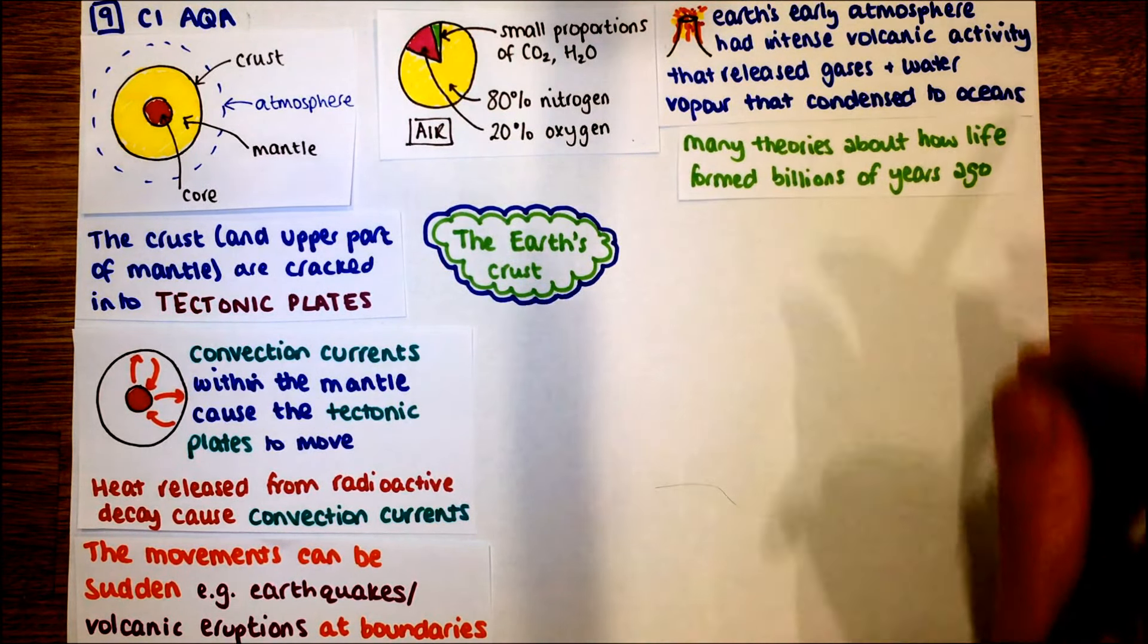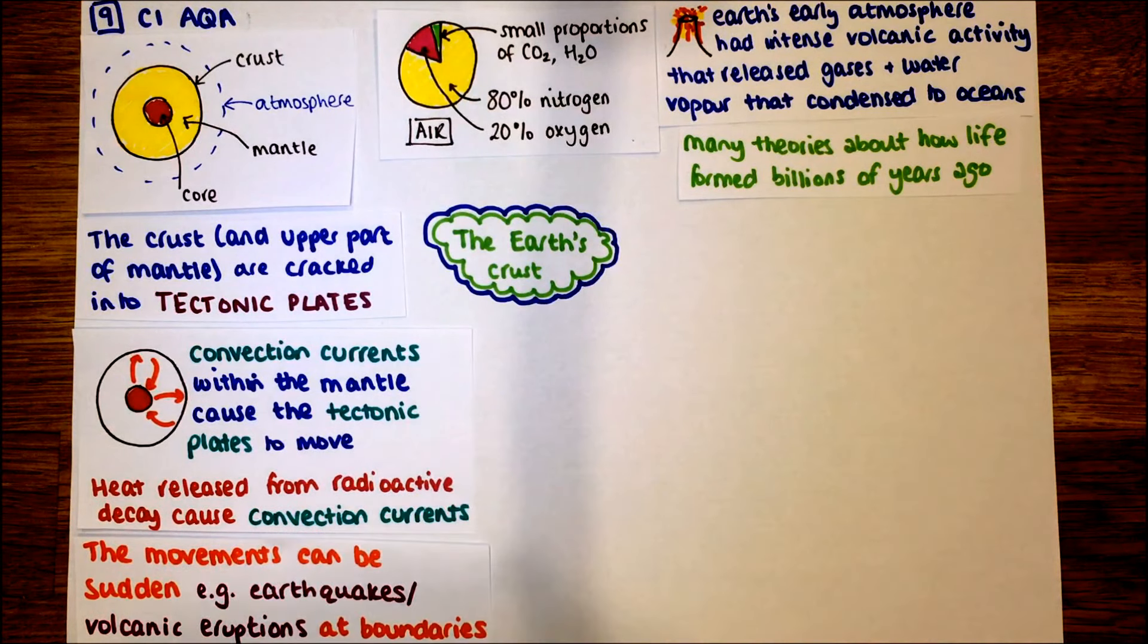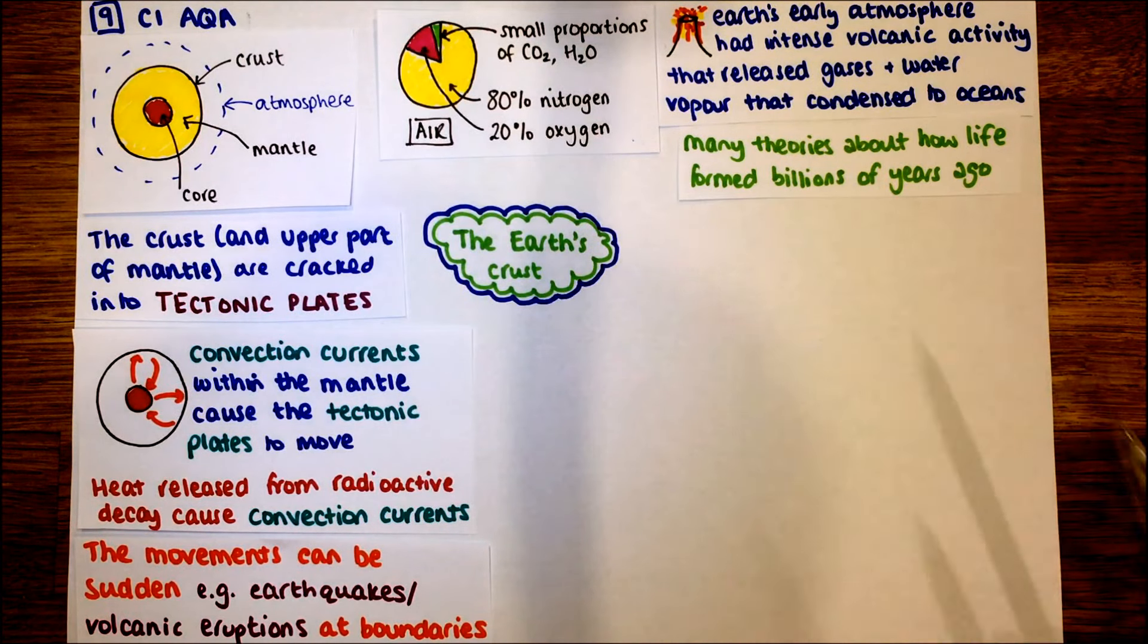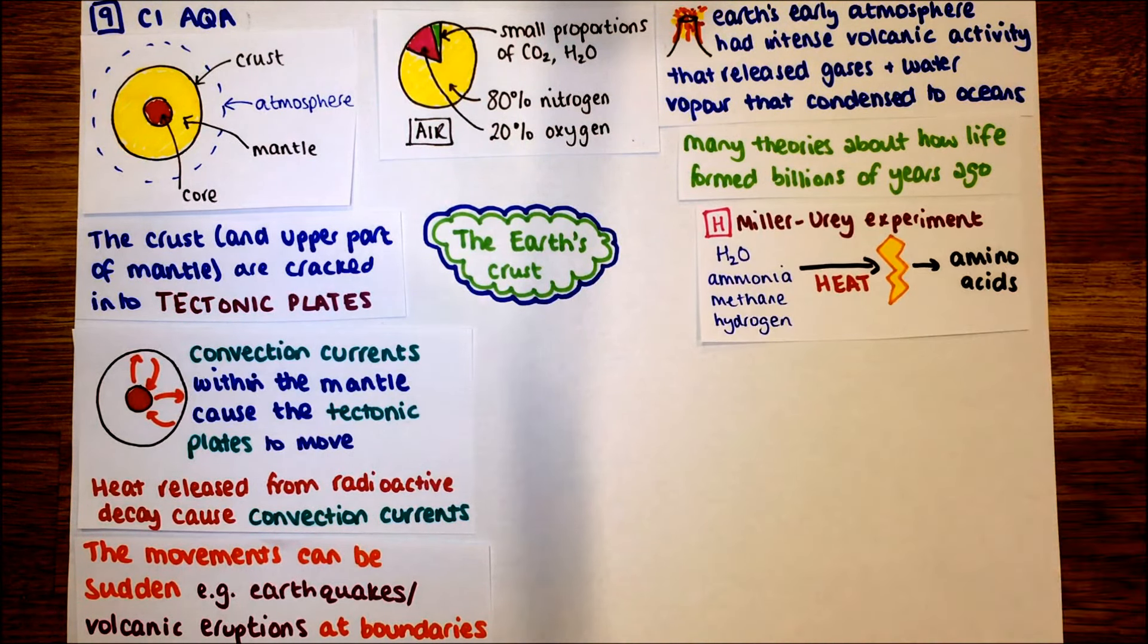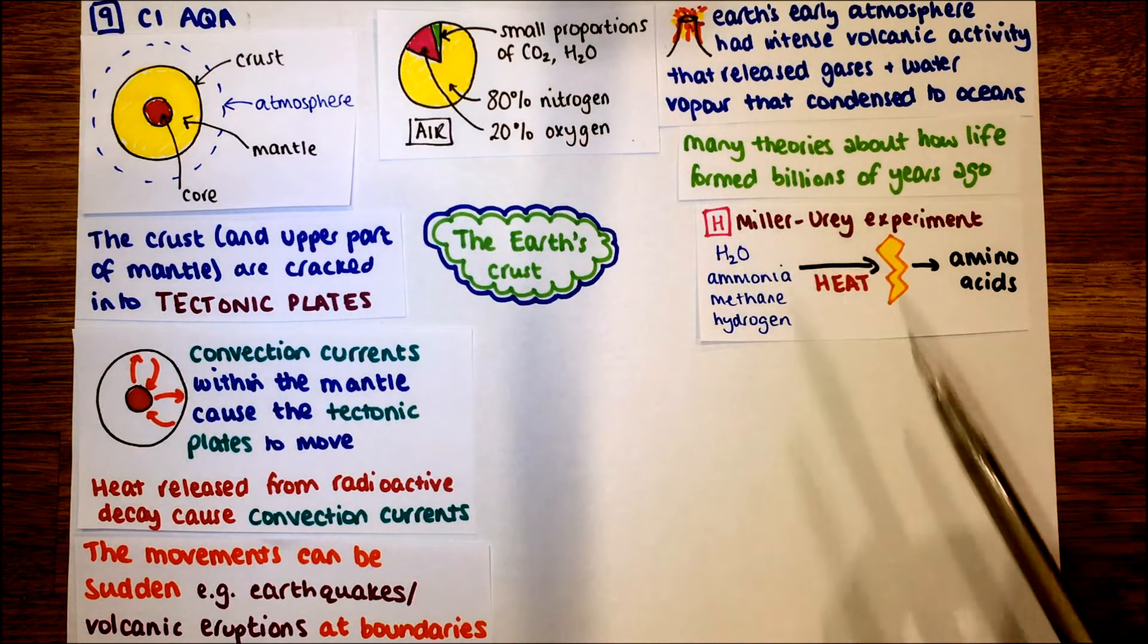There are loads of theories about how life formed billions of years ago. You may get a question on that. More than likely, you'll get given the information you need to answer that question. But there is one theory, particularly if you're doing the higher tier, which is represented by the H here. This is called the Miller-Urey experiment.